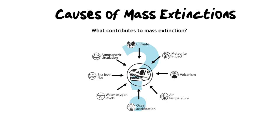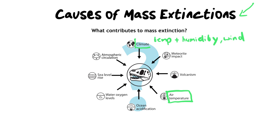What I want to also discuss is the causes of mass extinctions, because a lot of exams will probably ask this question and you need to elaborate on how these causes actually affect life on Earth. So let's talk about climate. Climate is when we are talking about temperature, but also other things like humidity and wind — not just weather, but long-term changes in the climate. Maybe it got colder, maybe it got hotter. Linked to that is air temperature, and often those two go together, so I would put them as ones that match.